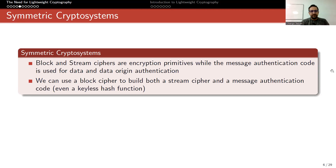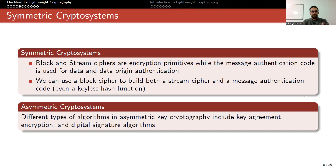Block and stream ciphers are encryption primitives, while message authentication codes are used for data and data origin authentication. We can use a block cipher to build a stream cipher, a message authentication code, or even a hash function. In asymmetric key cryptography there are different types like key agreement — Diffie-Hellman key exchange is one of the most famous — encryption like RSA, and digital signature algorithms like DSA or elliptic curve variants.